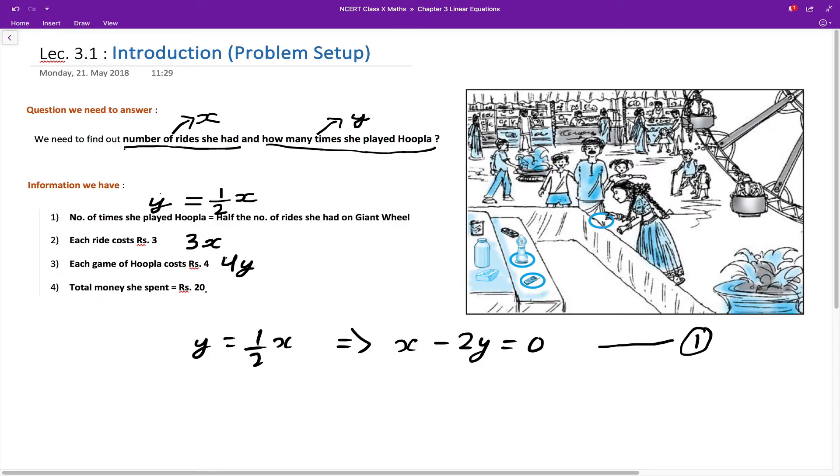Adding both of them, so the amount spent on the rides is 3x plus amount spent on the game of hoopla 4y, so this should be equal to 20. And that's it, this is our second equation. So let me just write it: 3x plus 4y is equal to 20. Right, so this is our equation number two.